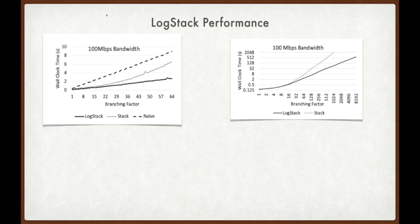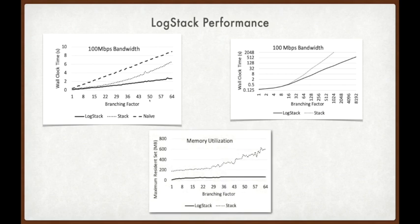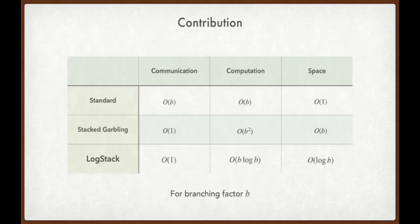We implemented Logstack and compared its performance both to standard garbled circuits without stacked garbling, and to stacked garbling. On this slide, I plot wall clock time as a function of the branching factor. For the purposes of benchmarking, each branch is simply the SHA-256 function. Logstack outperforms prior work both concretely and asymptotically. Although I didn't yet discuss it, Logstack also asymptotically outperforms stacked garbling in terms of space consumption. Specifically, stacked garbling consumes space linear in the number of branches, while Logstack improves this space consumption to only order log B. So this was Logstack — an improvement to garbled circuits that improves the computation cost of stacked garbling while retaining stacked garbling's important communication advantage.